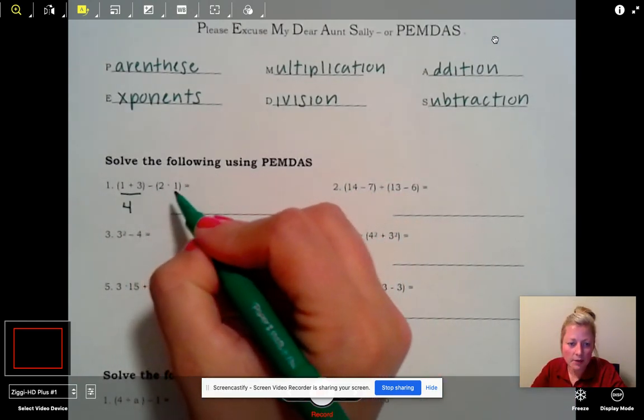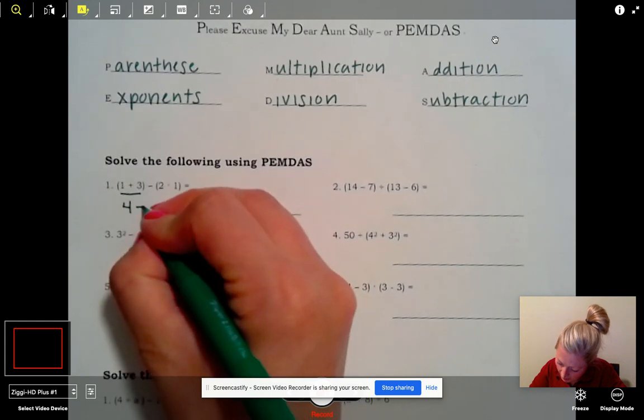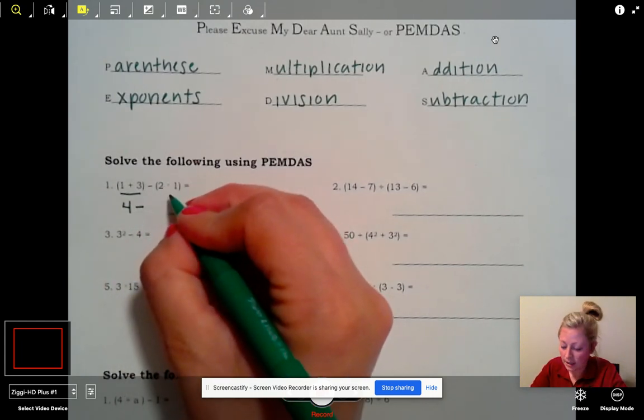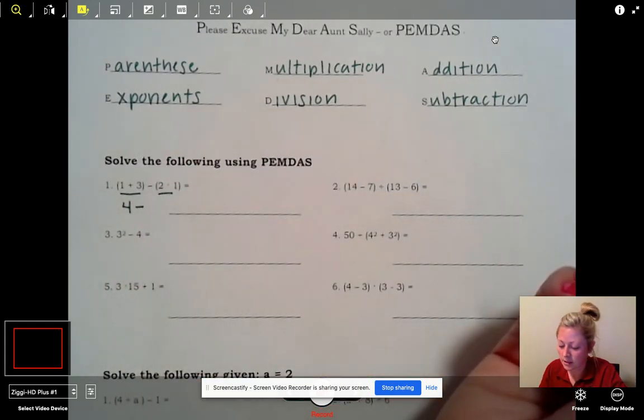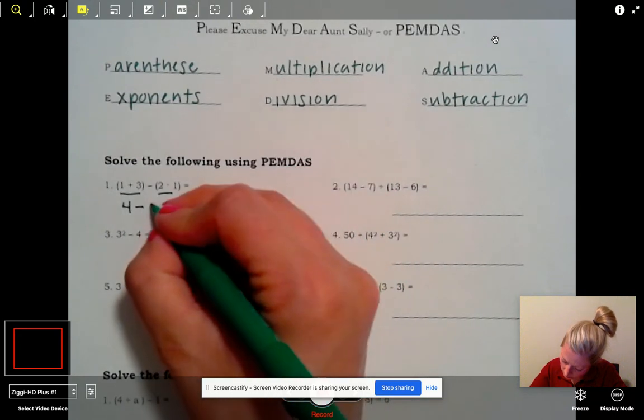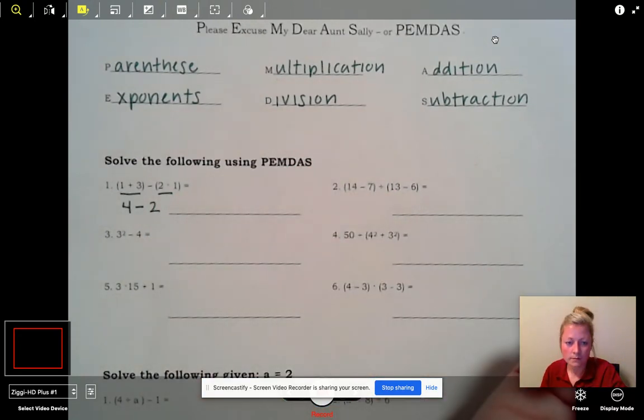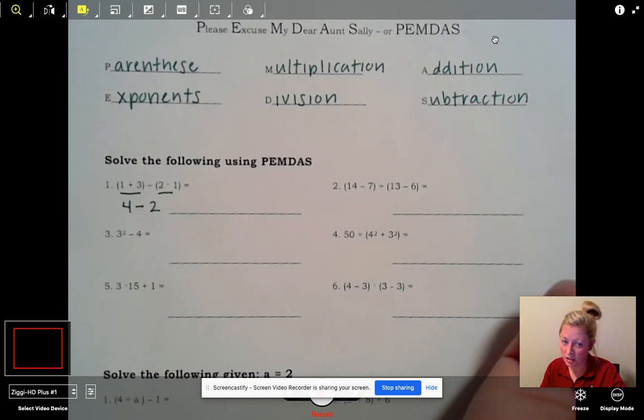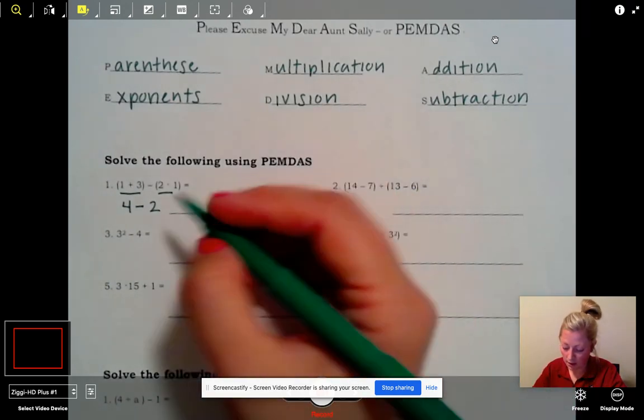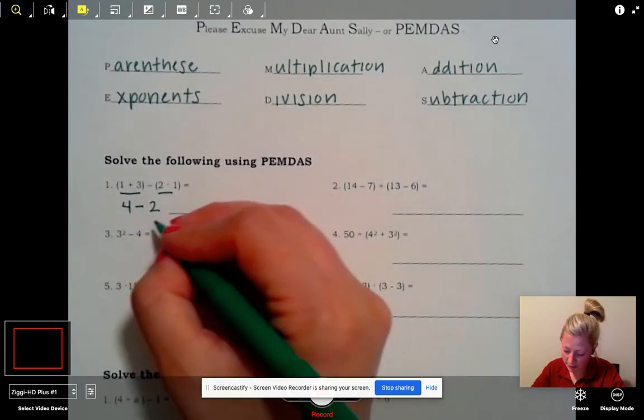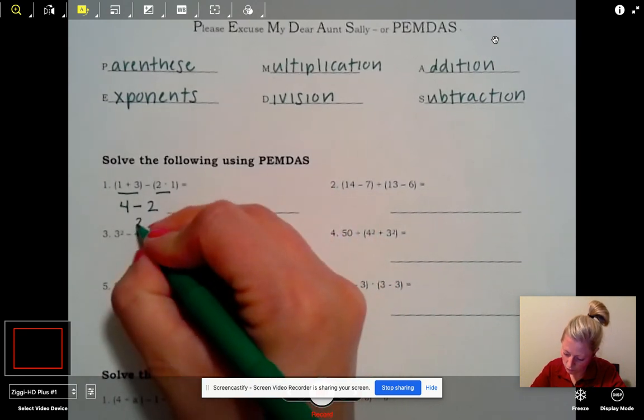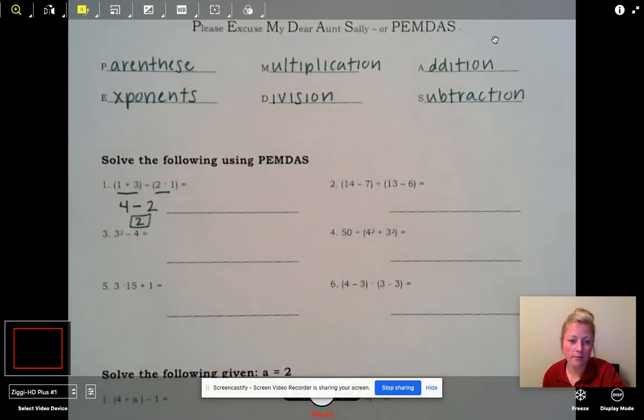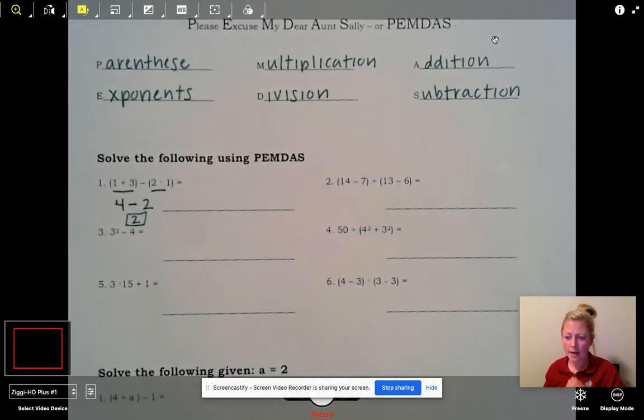You guessed it, D stands for division. And then the last two, I bet you could probably guess if you don't know: A for addition and S for subtraction. So again, please excuse my dear Aunt Sally, or sometimes called PEMDAS, is the way we go about simplifying a mathematical expression.